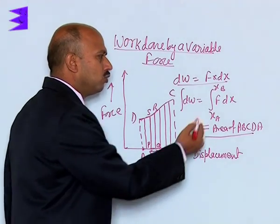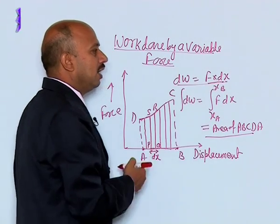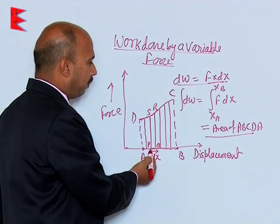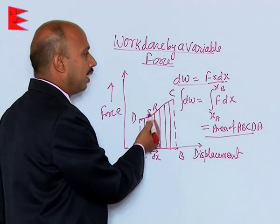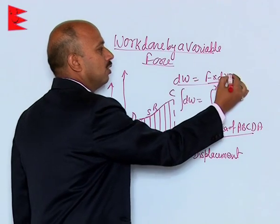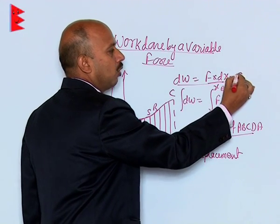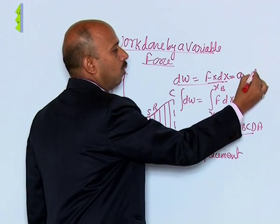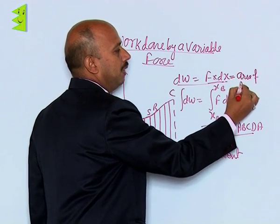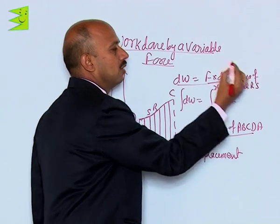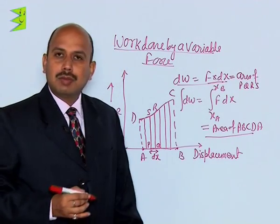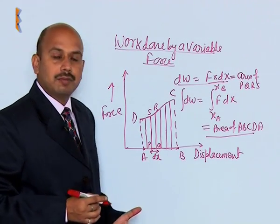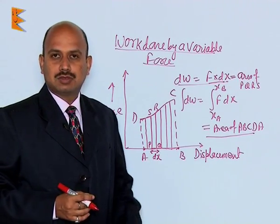Here we can also write F·dx, and actually F·dx is the area of the region P, Q, R, and S. So that can also be written as the area of PQRS. Therefore, work done by a variable force can be calculated by this method.